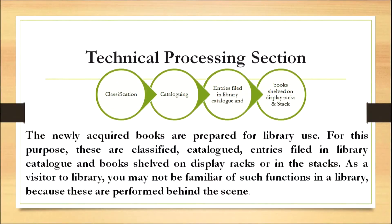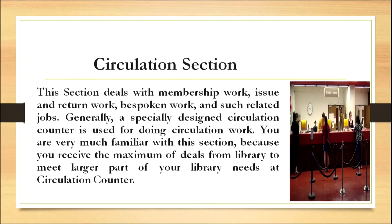The second section is the technical processing section. Newly acquired books are prepared for library use — they are classified, cataloged, entries are filed in the library catalog, and books are shelved on display racks or in the stacks. As a visitor to the library, you may not be familiar with such functions because they are performed behind the scenes.